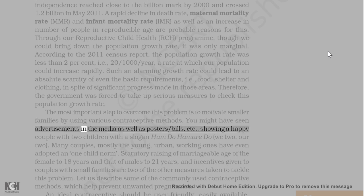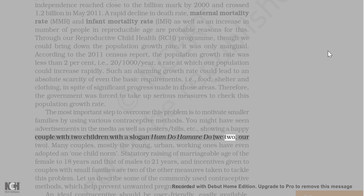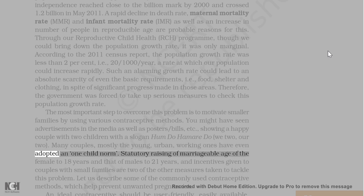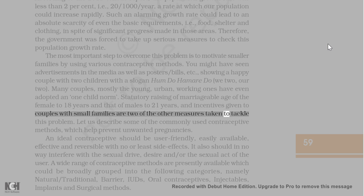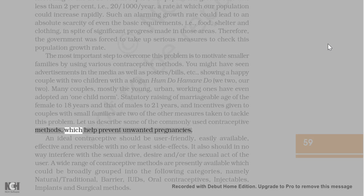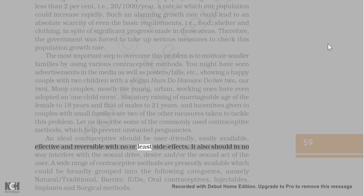You might have seen advertisements showing a happy couple with two children and the slogan 'Hum Do Hamare Do.' Many young urban working couples have even adopted a one-child norm. Statutory raising of the marriageable age of females to 18 years and males to 21 years, and incentives for couples with small families, are other measures taken. An ideal contraceptive should be user-friendly, easily available, effective, and reversible with no or minimal side effects, and should not interfere with the sexual drive or act of the user.